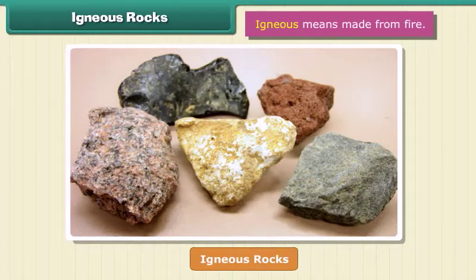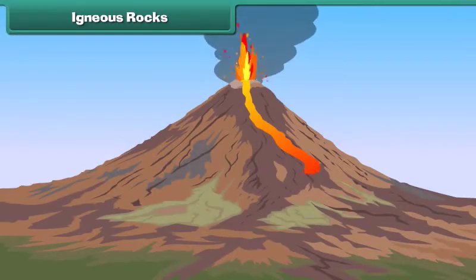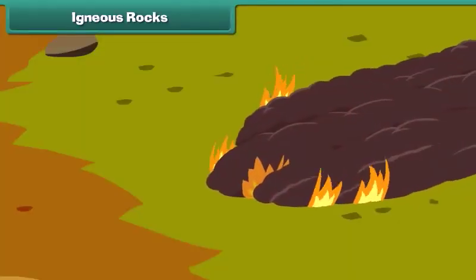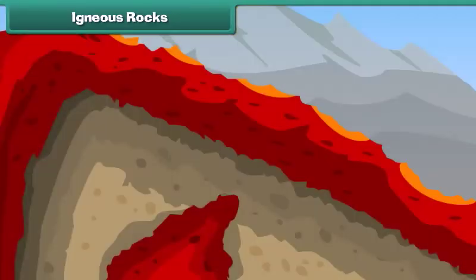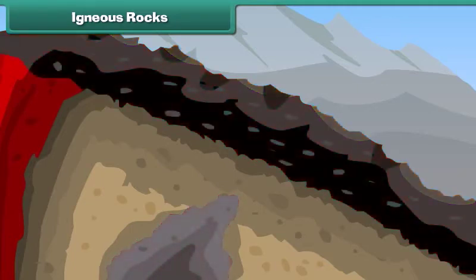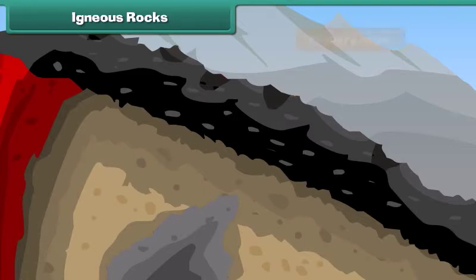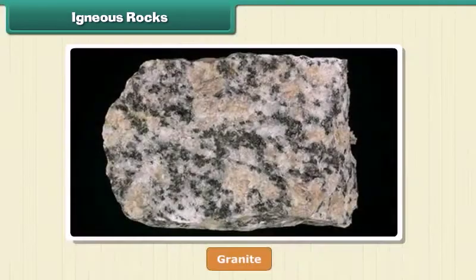Igneous means made from fire. When volcanoes erupt, it causes the liquid rock to rise above the ground. When this liquid rock is present inside the earth, it is called magma. This magma cools and becomes solid. Rocks thus formed are called igneous rocks. They are also called primary rocks. Granite is an example of igneous rock.